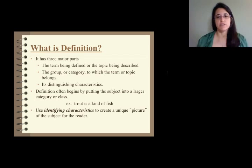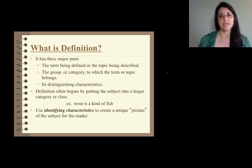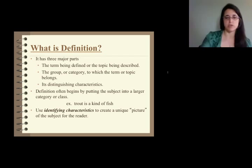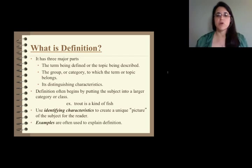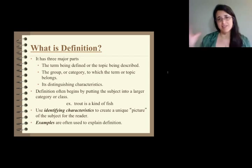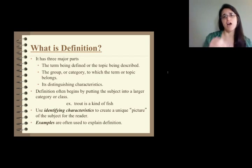Use identifying characteristics to create a unique picture of the subject for the reader. This is very important. Those identifying characteristics create that picture, and without that picture, our reader is unable to stay with us. That's where that description starts to trickle in. We have to be very careful it doesn't take over. Examples are often used to explain definition. Remember that everything we're learning throughout this course is some type of illustration. We have basic illustration, which is just examples, exemplification, cause and effect, and comparison contrast. Definition is another one of those structures of illustration.